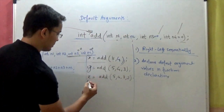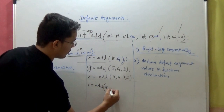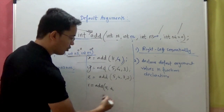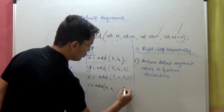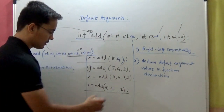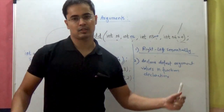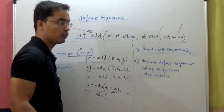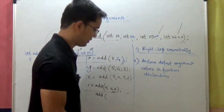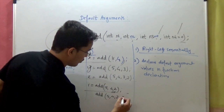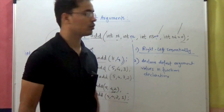One last rule: you cannot make a call like add(5, 4, , 2) — skipping the first default argument and just specifying the last one, expecting n3 to automatically be 0 and n4 to be 2. No — the sequence has to be followed. If you don't want to use the default value of n4, you can't use the default value of n3 either. You have to say something like add(5, 4, 2, 1). You can't break the sequence.